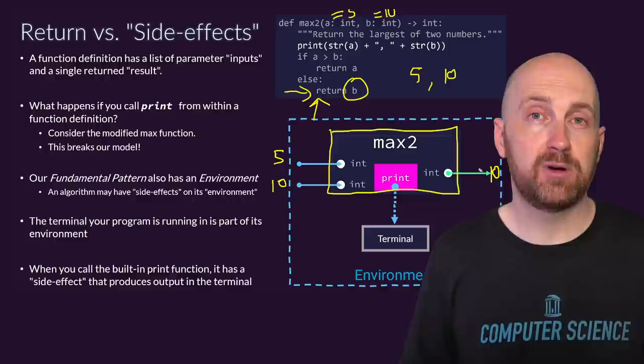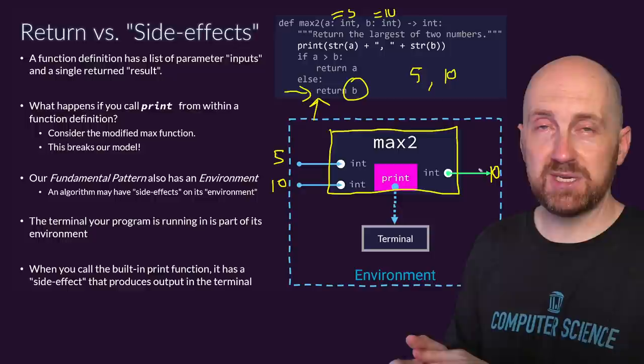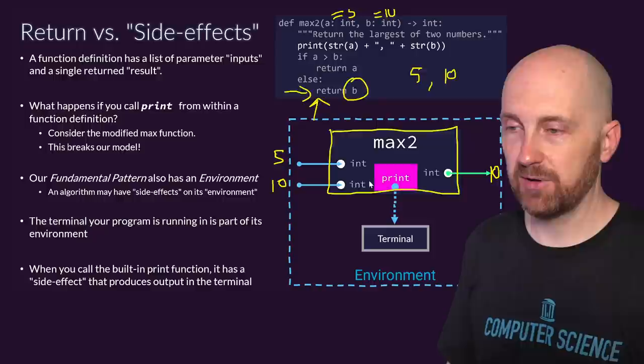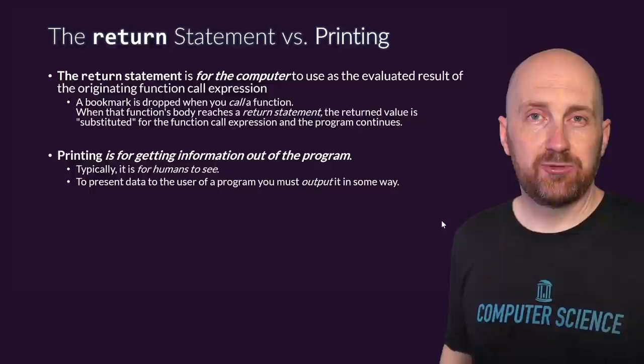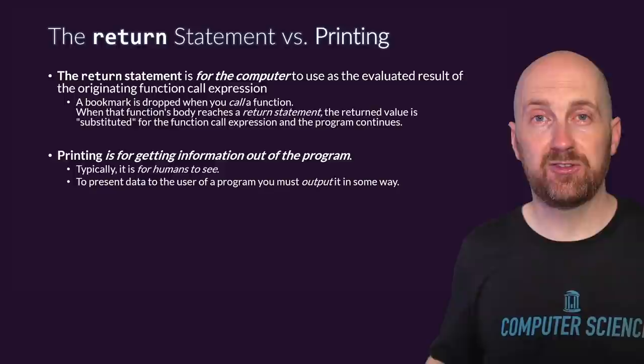If a function wants to print things out and produce side effects that show up as the program runs, that's fine — you'll often find yourself doing this when writing a function and trying to debug an issue. But printing is creating a side effect; it produces output in your terminal. Returning is sending a value back to somewhere else in your program so you can make use of it later. In other words, the return statement is really for the computer as it evaluates your program, whereas printing is for getting information to your end user.